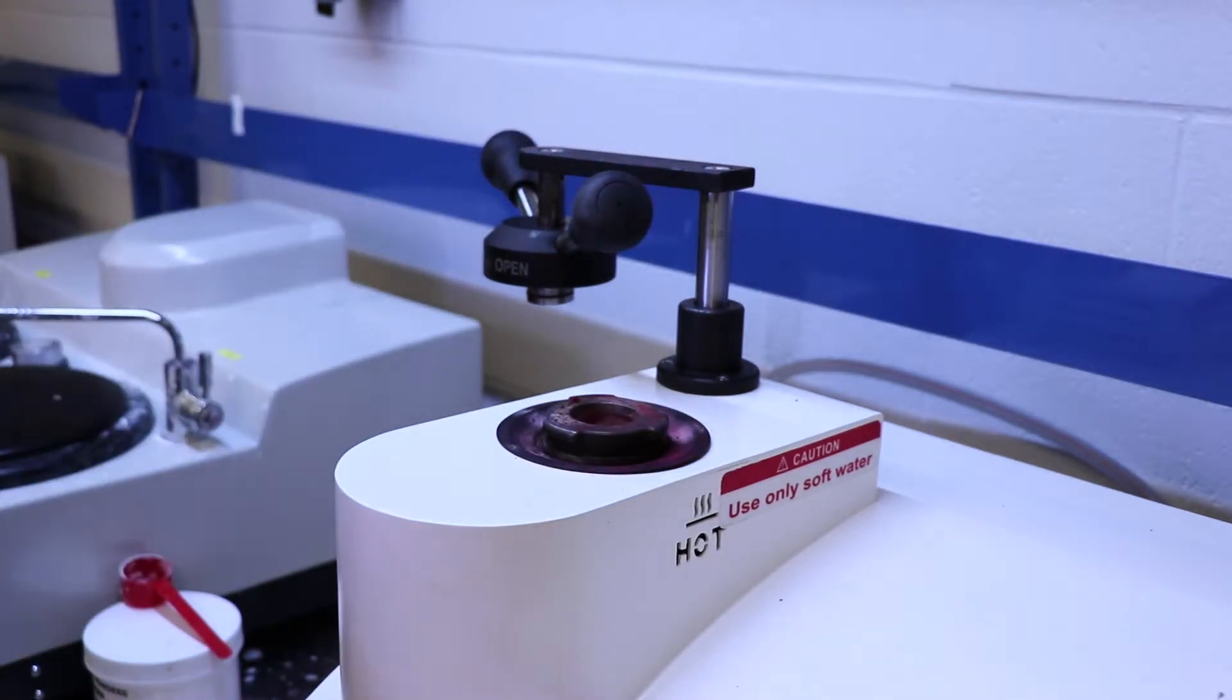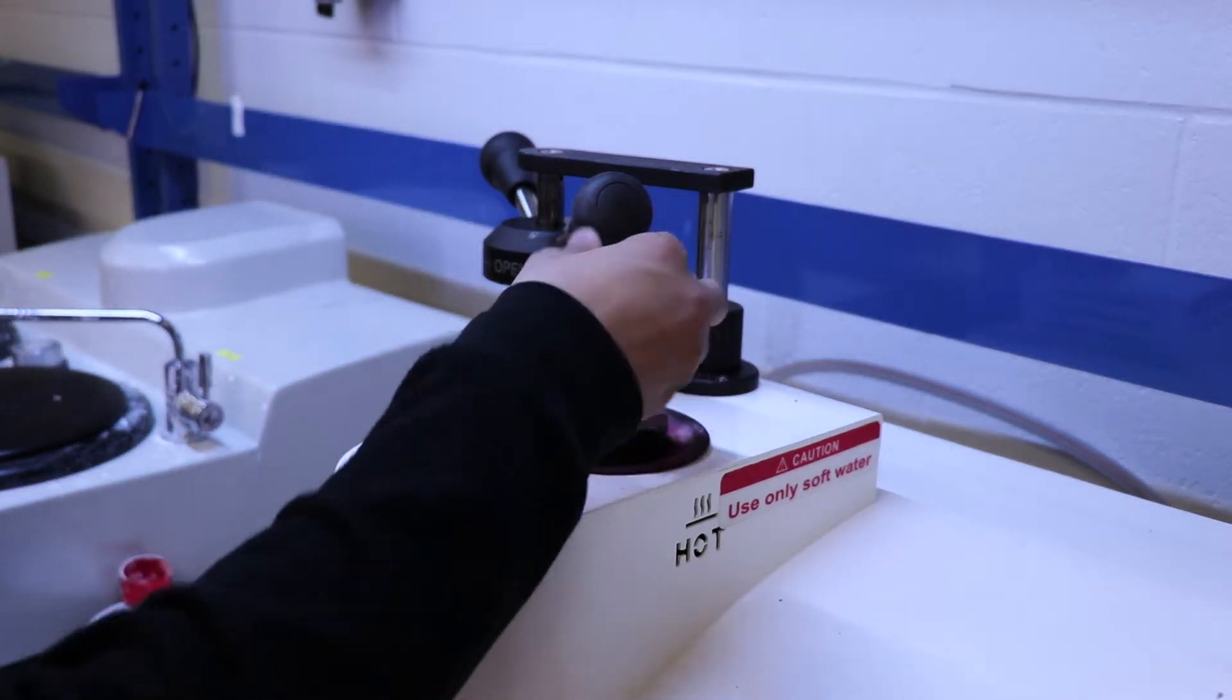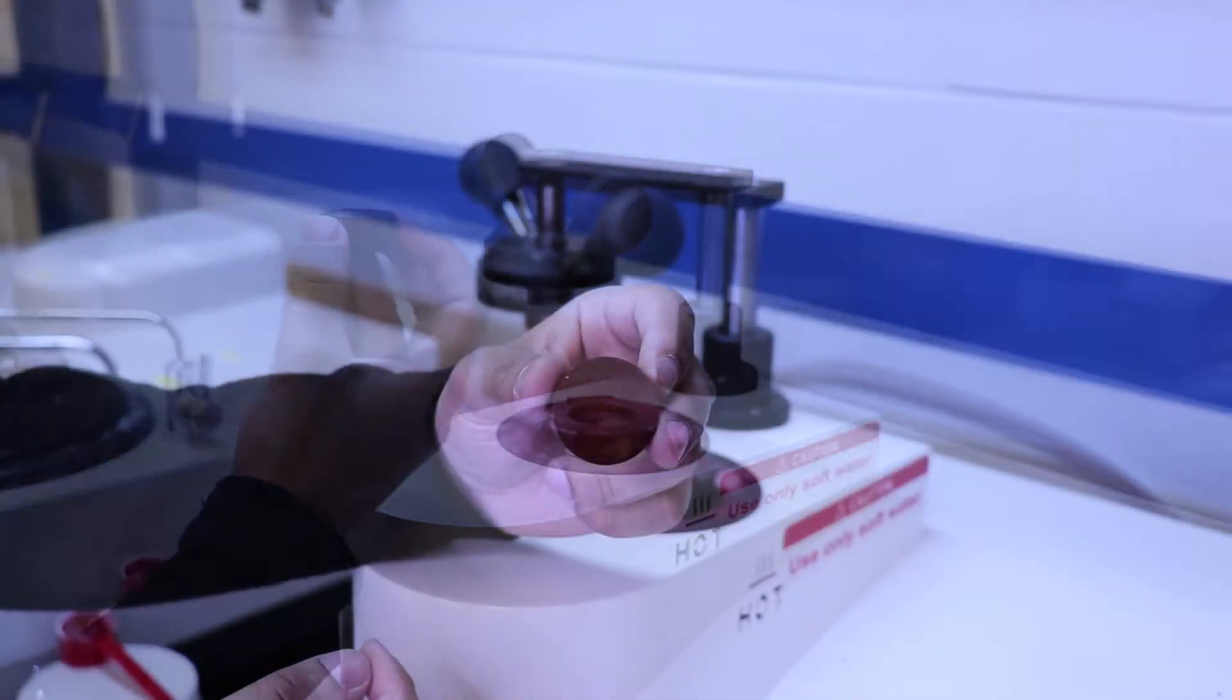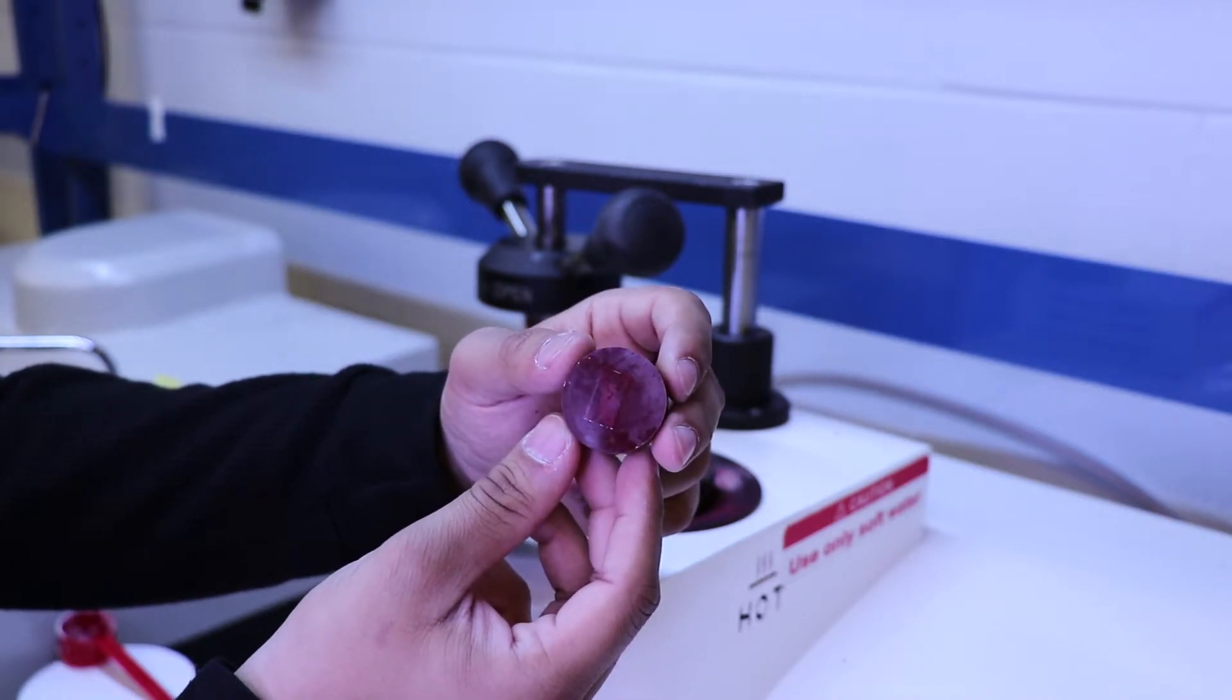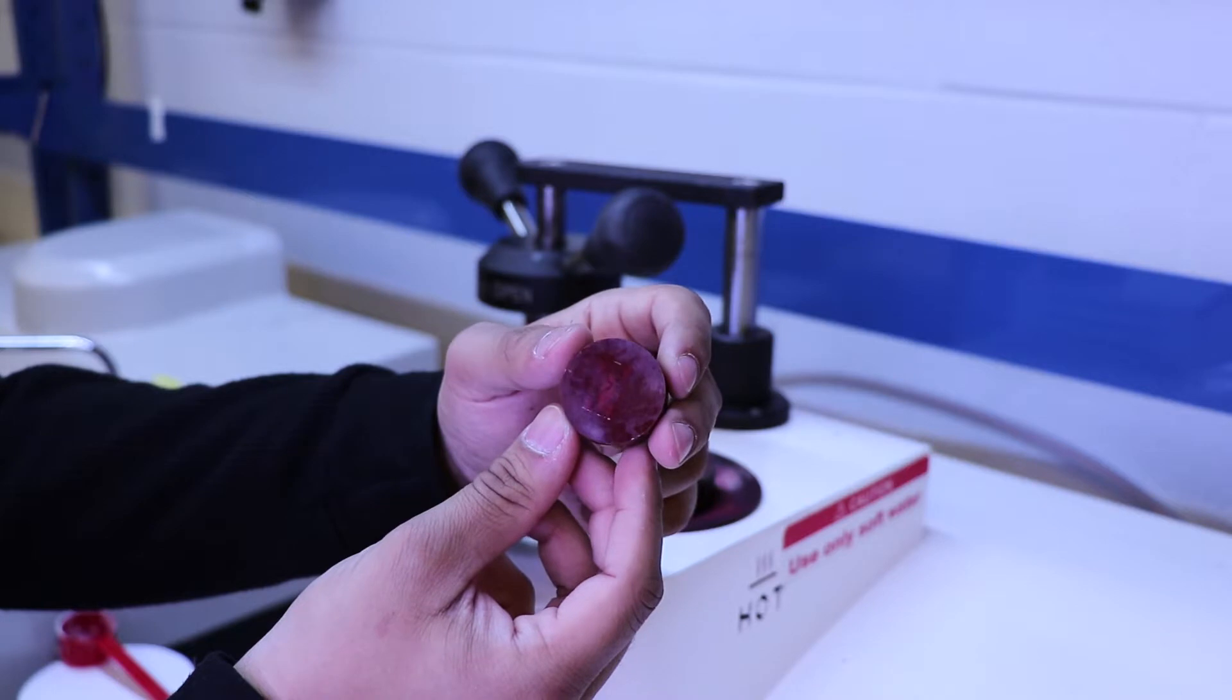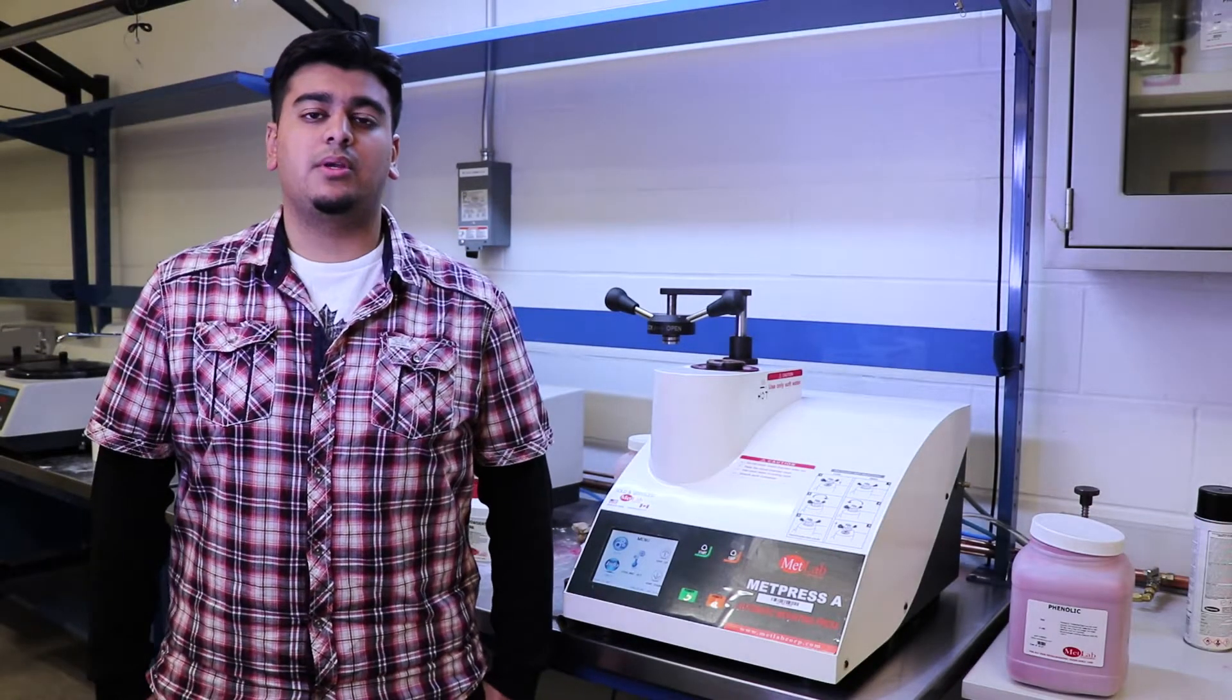Once you get that off, just take that out of the way by rotating it to the left side and then you can pick up your sample. So as you can see, you can't see your sample. So what you're going to have to use is the polishing machine to wipe off the excess phenolic.